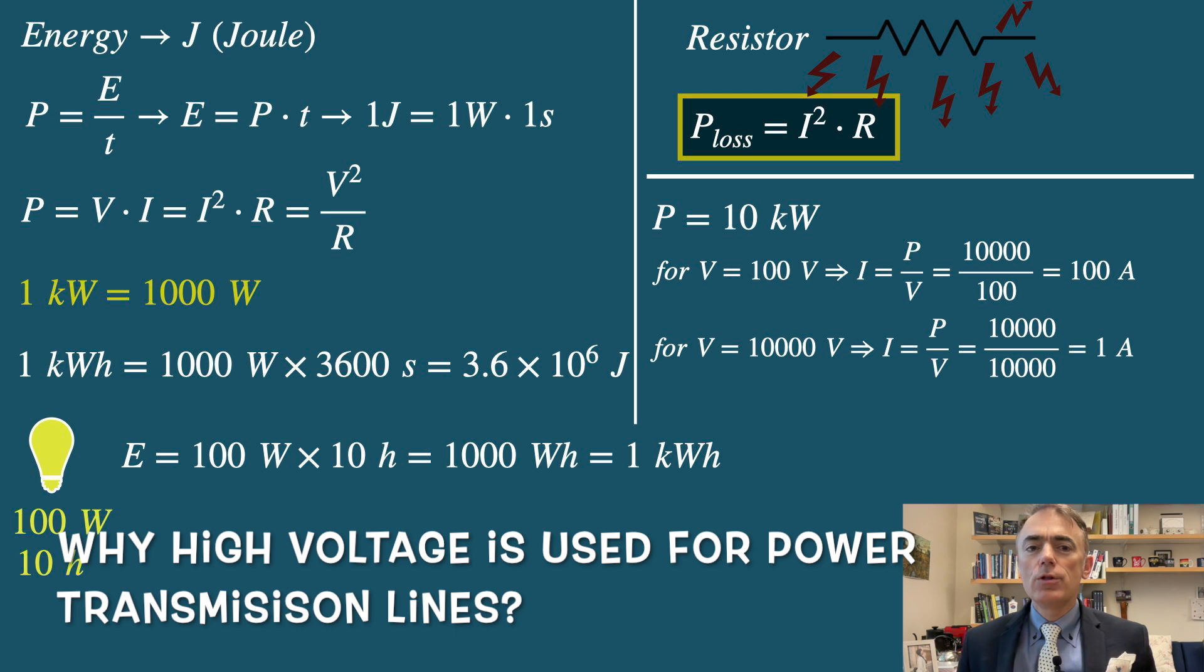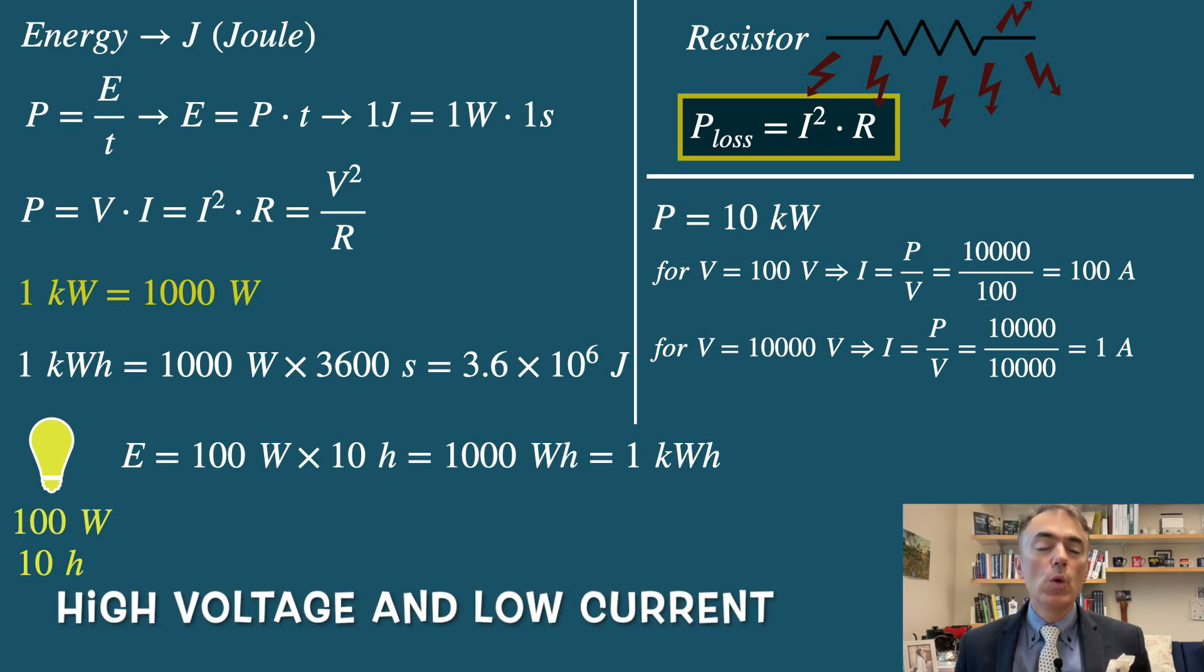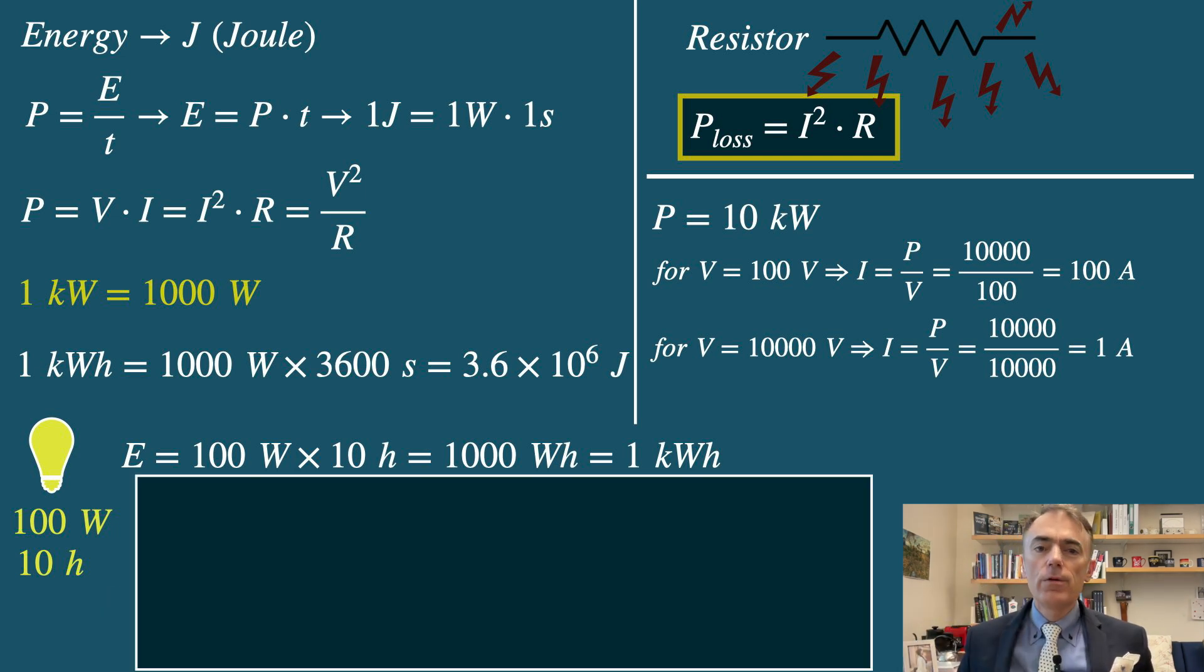Why is high voltage used for power transmission, then? Electrical power is generated at power plants and then transmitted over long distances to reach consumers. To minimize energy loss, power is transmitted at high voltages and low currents. For example, suppose the resistance of a transmission line is 2 ohms.